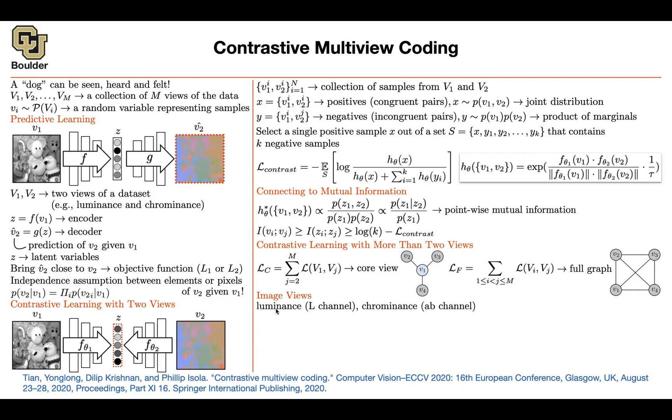Perhaps you can separate the luminance from the chrominance channels. So, L-A-B is another way of representing images. Rather than red, green, blue channels, you can have L-A-B channels.